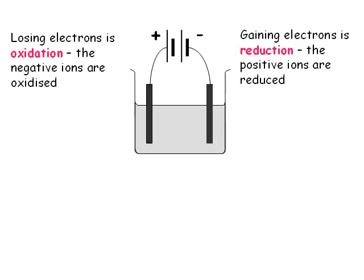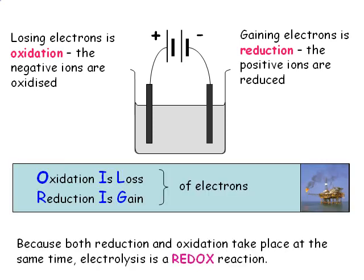Two more terms we need to know are oxidation and reduction. Oxidation is losing electrons, so the negative ions get oxidised when they lose their electrons at the anode. Gain of electrons is called reduction. The positive ions at the cathode are getting reduced. We can use OIL RIG to help us remember this: oxidation is loss, and reduction is gain of electrons. So electrolysis is an example of a redox reaction.